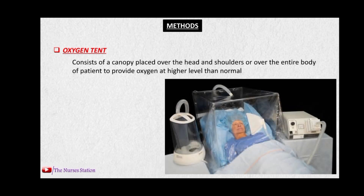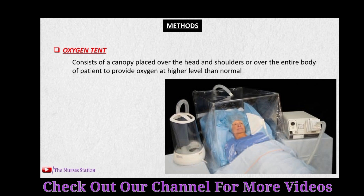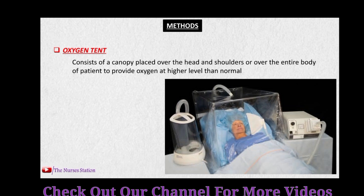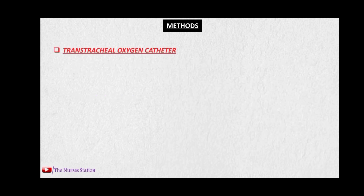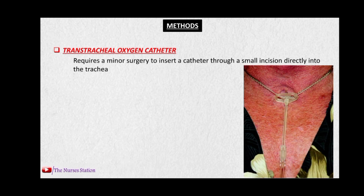The next method is the oxygen tent. In this, a canopy is placed over the patient's head and shoulders, over the entire body, or sometimes over the face only, to provide oxygen at higher levels than normal. The oxygen tent connects to the source through a pipe which delivers oxygen at higher concentrations. The flow rate is 8 to 10 liters per minute.